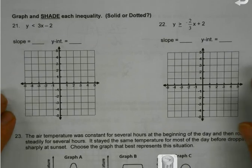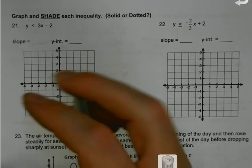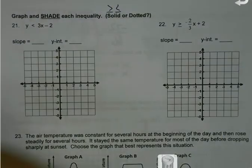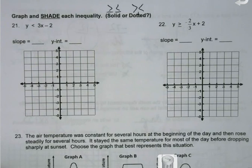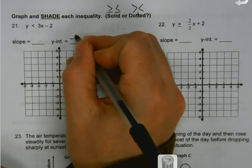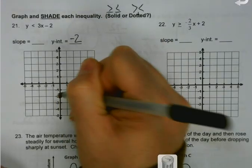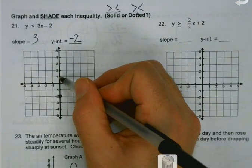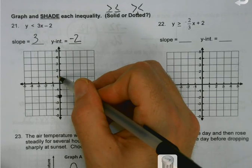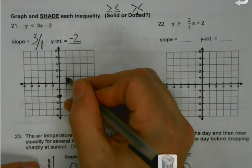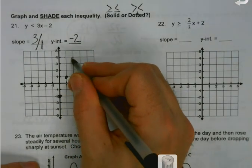Graph and shade — we've been doing this for a couple of days. Solid or dotted: if there are inequality symbols with the line underneath (≤ or ≥), it's solid; without the line (strict inequalities), it's dotted. For this problem, I got my y-intercept. For my slope — do I just go up 3? It's 3 over 1, so up 3 and over 1. No line underneath the inequality symbol, so we're going dotted.